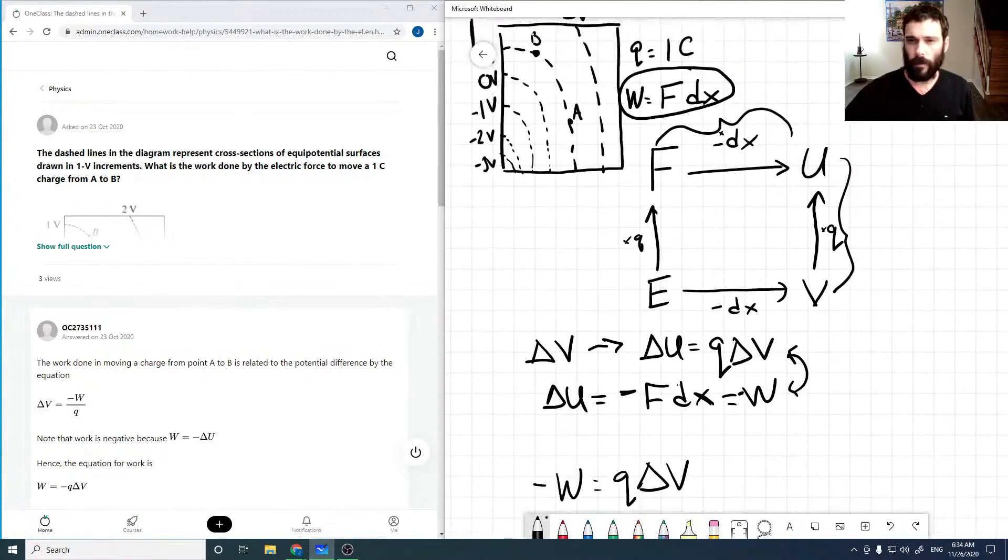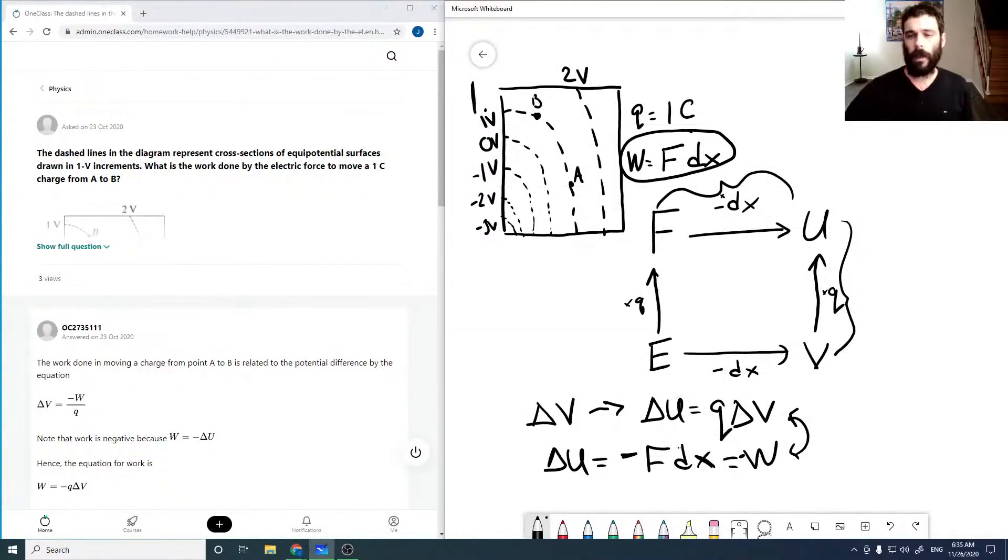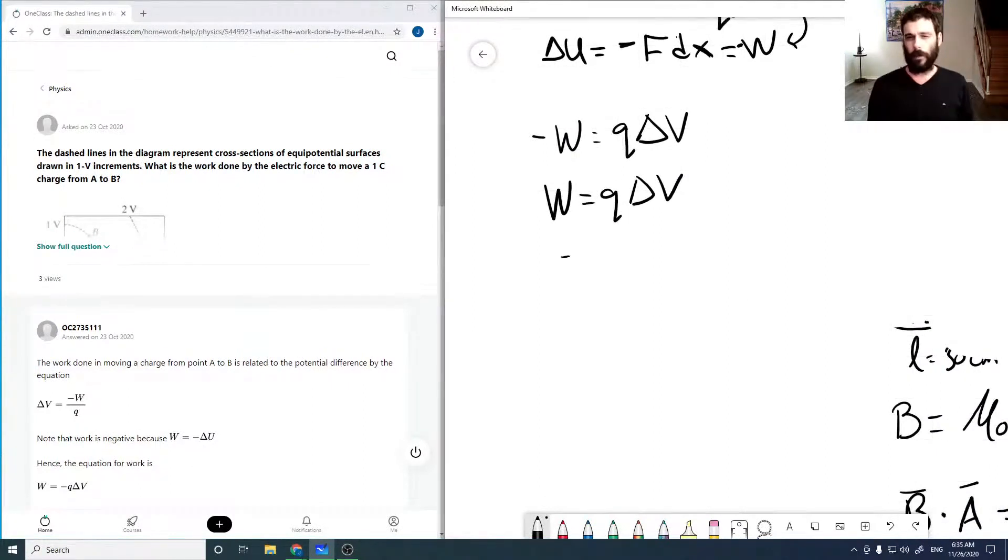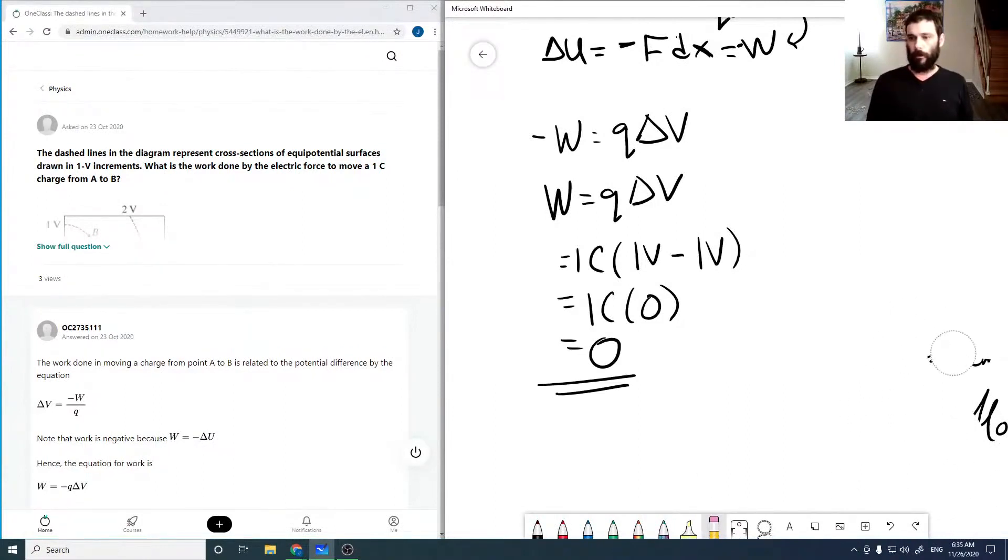Now, looking back at the question again, point A and point B are both at 1 volt. So V for both is 1 volt, so that means q delta V is just 1 coulomb times 1 volt minus 1 volt. Now that's just 1 coulomb times 0, which is 0. So our work, which many of you might have heard, but we've expressly shown it, our work in moving along an equipotential surface is 0.